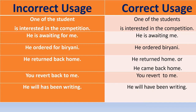'He's awaiting for me' — correct usage is 'he's waiting for me' or 'he's awaiting me.' 'He ordered for biryani' — correct: 'he ordered biryani.' 'He returned back home' — correct: 'he returned home' or 'he came back home,' since 'returned' already means 'came back.'